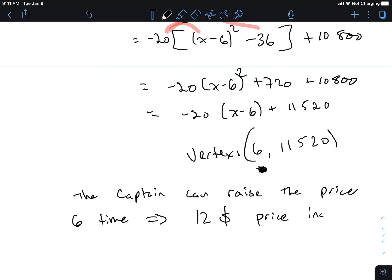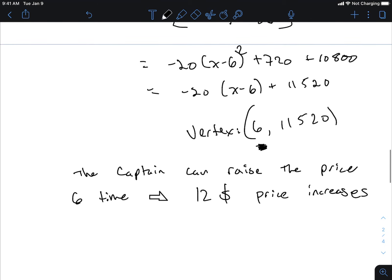$12 price increase. But what's the maximum revenue when he increases the price $12? The y portion: $11,520. Any questions, comments, or concerns?